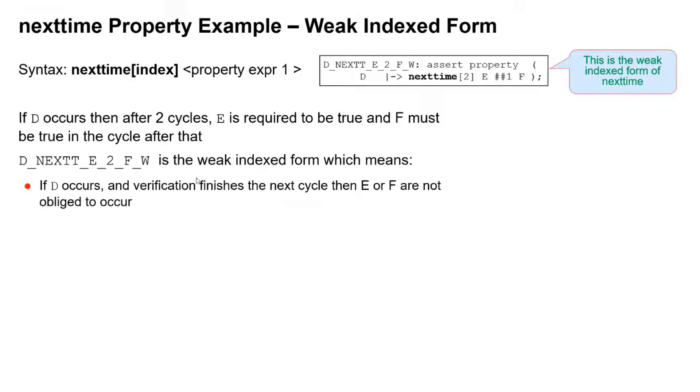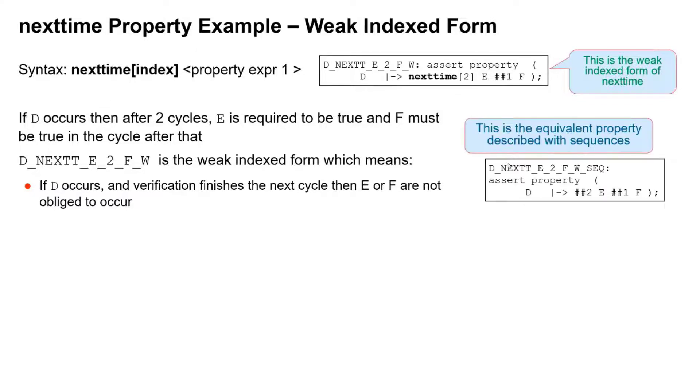So this is the weak form, meaning there's no obligation, once d has occurred, that e and f have to occur. We could easily write an equivalent to this property in a much more readable way, in my opinion, using sequences.